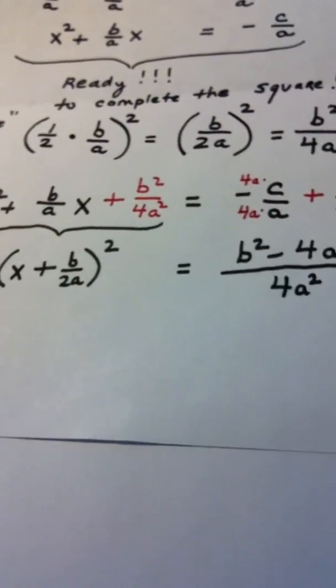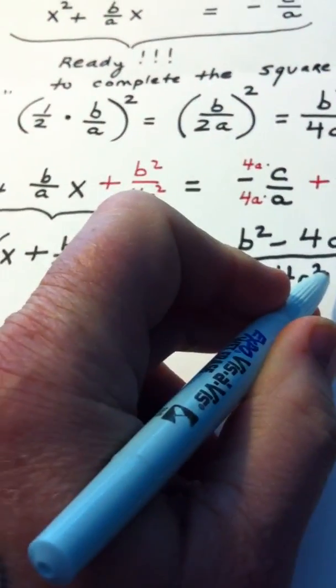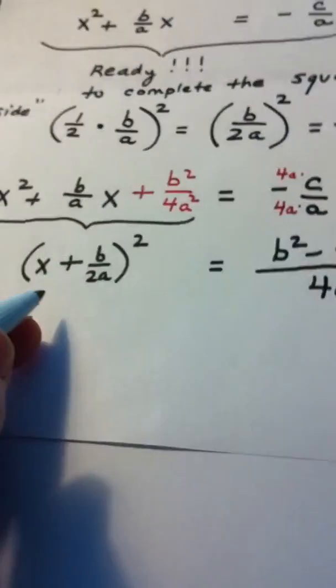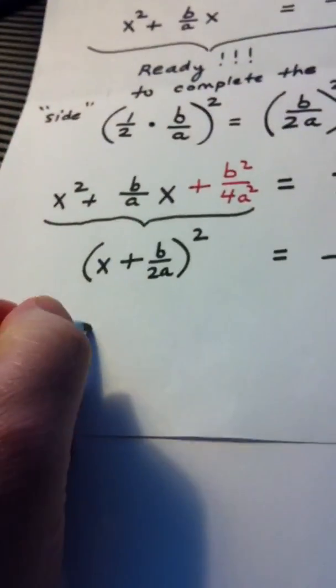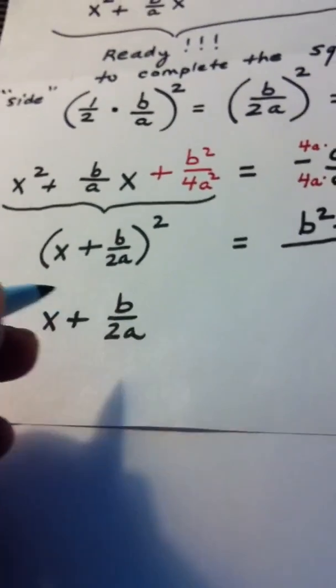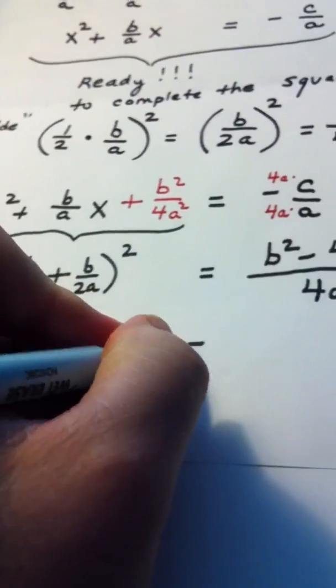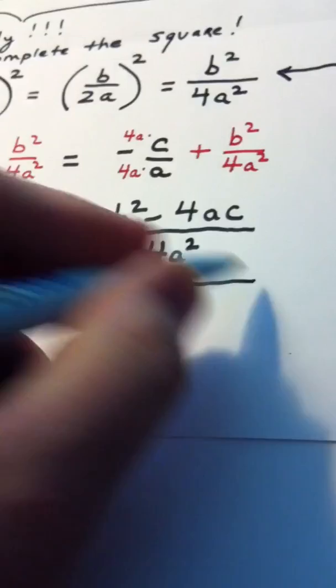Now what we want to do is solve this equation for x. So we're going to apply the square root property. Remember when I have something squared equals a number, the square root property when I apply it tells me the something is now by itself, so x plus b over 2a is alone, there's no squared on it.